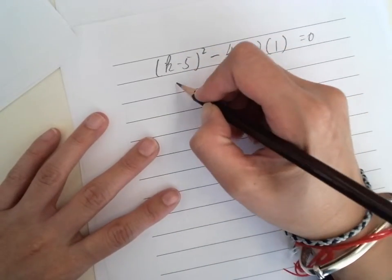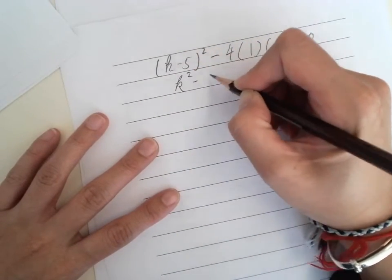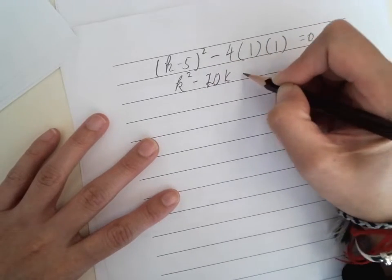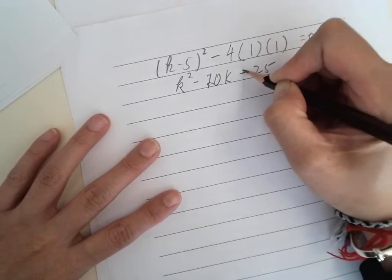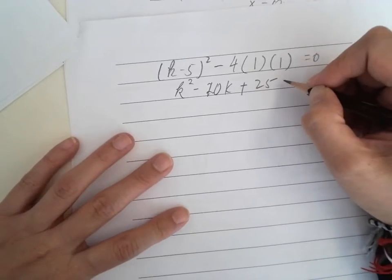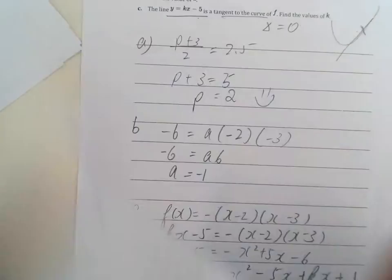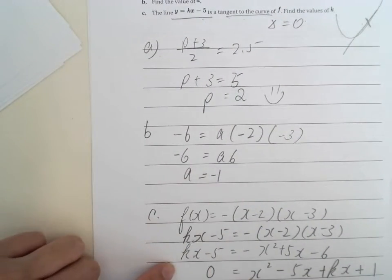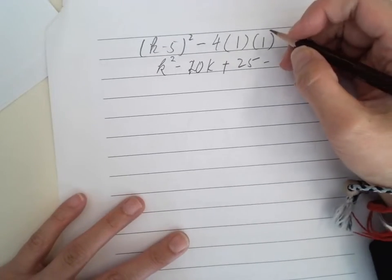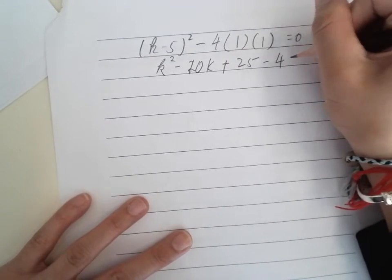So, expand it a little bit. Then I will have K square minus 10K plus 25 minus 4 equals to 0.